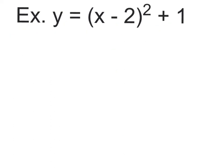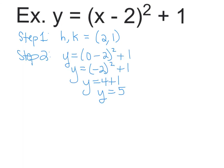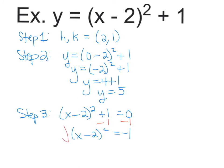We have one last example — this one is what happens when you end up with no x-intercepts. Steps 1 and 2 work the same: find the vertex and find the y-intercept by plugging in 0 for x. Step 3: find the x-intercepts by setting the equation equal to 0. Here's where the problem has an issue — once I take the square root of both sides, I'm taking the square root of a negative. You cannot square root a negative, which means the graph does not cross the x-axis at any point.